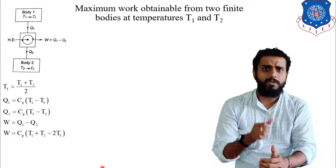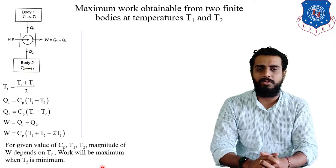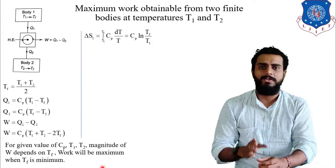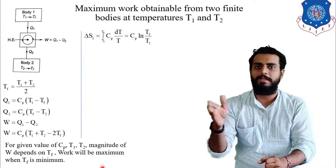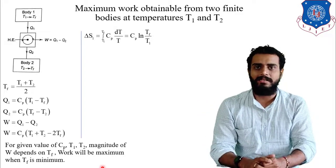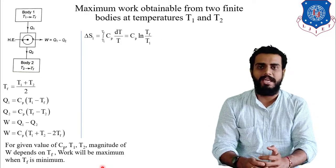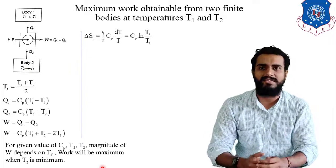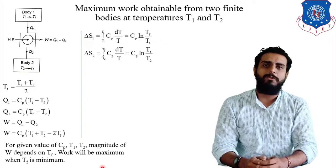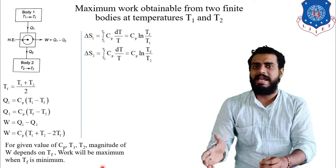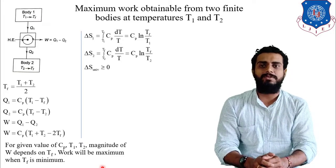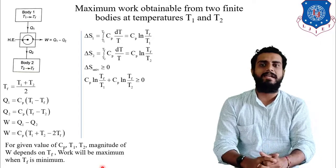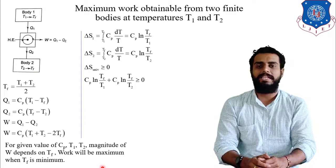To find the minimum achievable Tf, we use the entropy principle. The entropy change ΔS1 equals Cp·ln(Tf/T1), obtained by integrating dQ/T = Cp·dT/T from T1 to Tf. Similarly, ΔS2 equals Cp·ln(Tf/T2). For any reversible or irreversible process, ΔS_universe must be greater than or equal to zero, so ΔS1 plus ΔS2 ≥ 0.